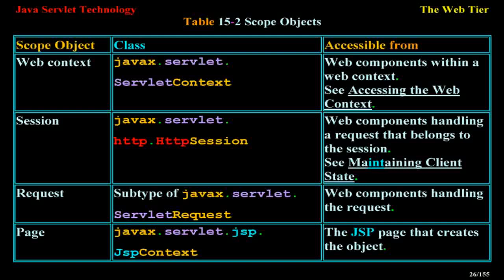Request: subtype of javax.servlet.ServletRequest, accessible from web components handling the request. Page: javax.servlet.jsp.JspContext, accessible from the JSP page that creates the object. Controlling concurrent access to shared resources.